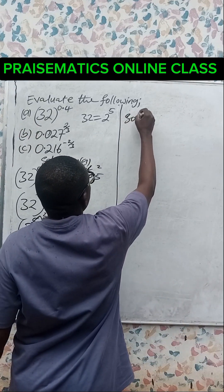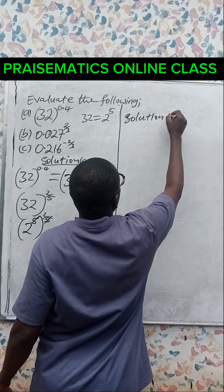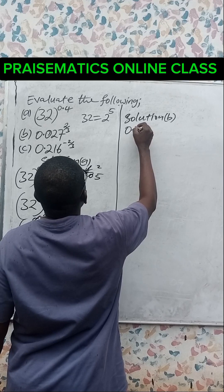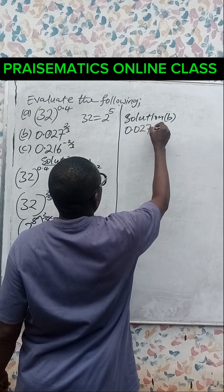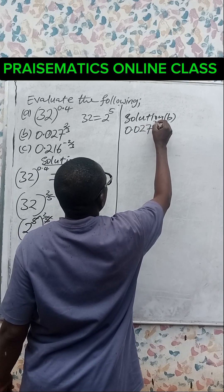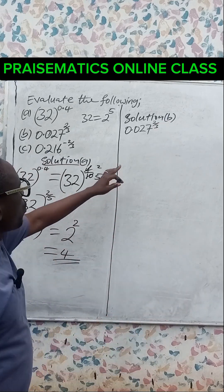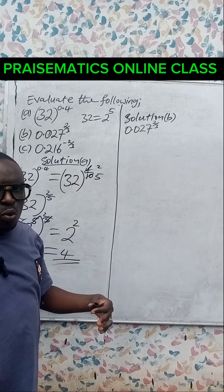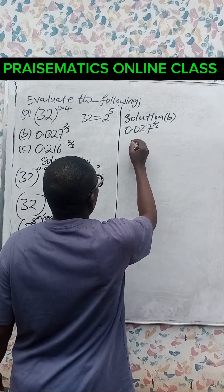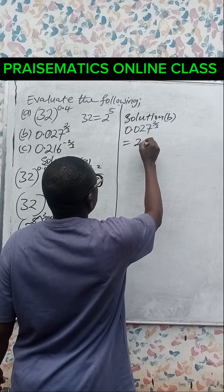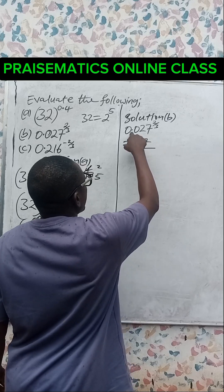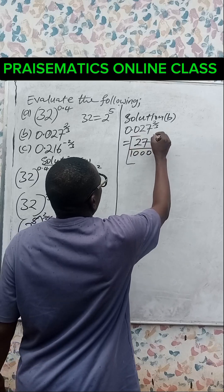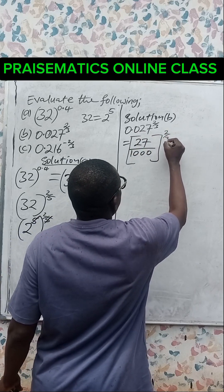Now, Solution B. We have 0.027 raised to the power 2 over 3. First of all, we need to convert 0.027 to a fraction, which gives us 27 divided by 1,000, raised to the power 2 over 3.